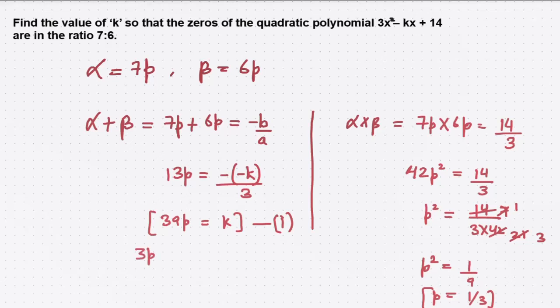Now you can substitute it in the first part of your equation. Substitute p = 1/3: 39 times 1/3, and we need to find out k.